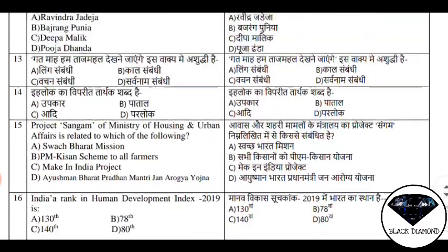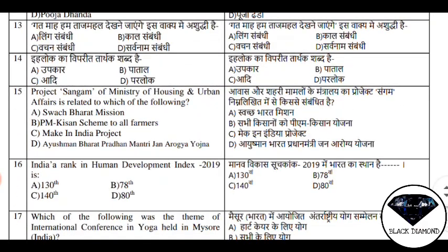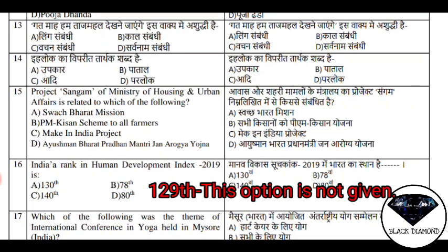Question number 16 asks: India's rank in the Human Development Index 2019 — that is, what is India's position in the Manav Vikas Suchkank 2019? The options are 130, 78, 140, or 80. The correct answer is 129th rank.